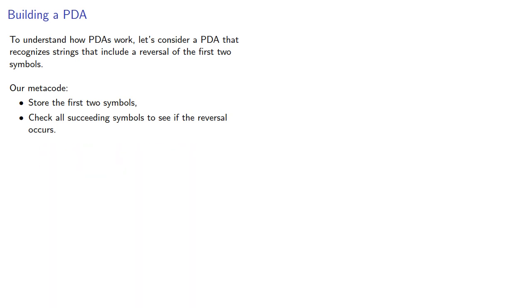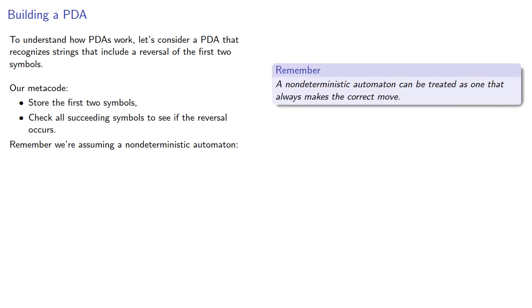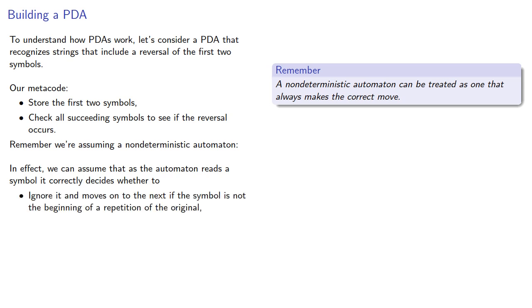Remember, we're assuming a non-deterministic automaton. A non-deterministic automaton can be treated as one that always makes the correct move. In effect, we can assume that as the automaton reads a symbol, it correctly decides whether to ignore it and move on if the symbol is not the beginning of a repetition, or compare it to the original pair and verify that it is a recurrence.